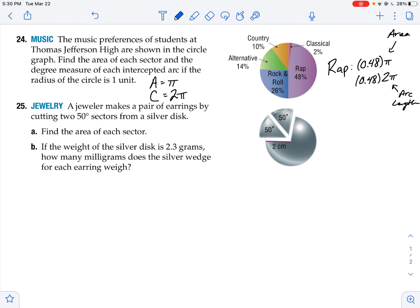So if I do the same thing for country, that would be 0.1 or 0.10 times pi and 0.10 times 2 pi. Where this would be the area. You're taking 10% of the area and 10% of the arc, or 10% of the circumference to find your area and your arc length, respectively.